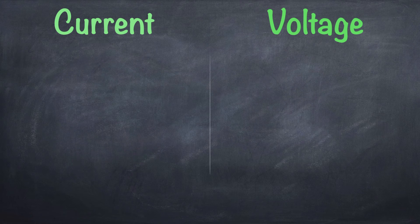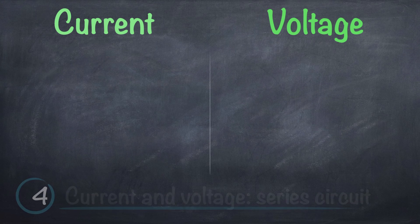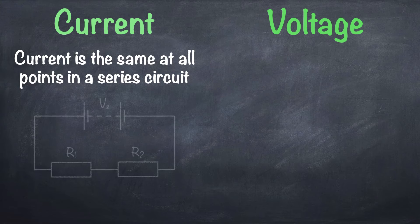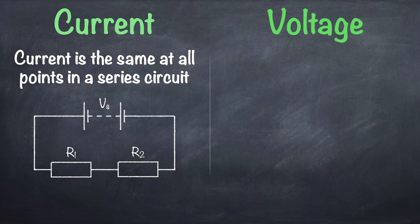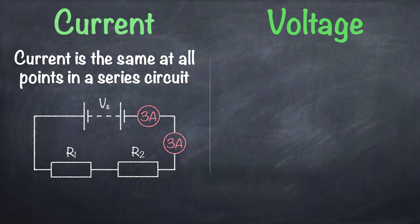Number four, current and voltage in a series circuit. First off, current is the same at all points in a series circuit. Taking this circuit as an example, if the current at this point is three amps then it will be three amps at this point and you guessed it, three amps at this point too.